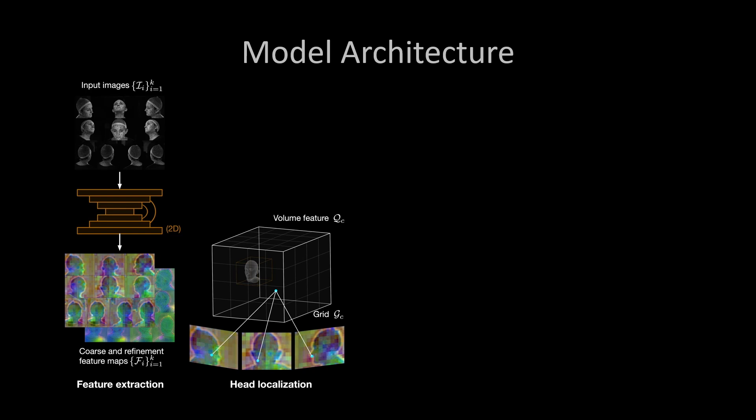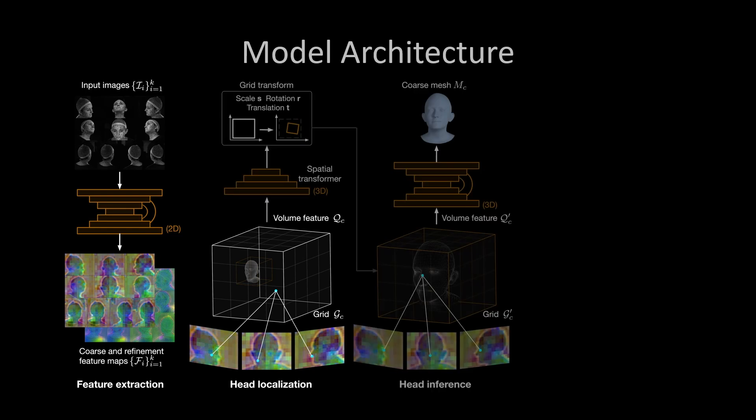There is a problem though. Capturing entire moving heads requires a large capture volume, while the head only occupies a small subspace of that volume. However, the feature cube contains information about the location and scale of the head. We leverage this with a trainable spatial transformer module that predicts 3D scale and translation to transform the sampling grid to only cover the head region. We then perform volumetric feature sampling to obtain a localized feature cube, followed by predicting a coarse 3D head mesh in correspondence.